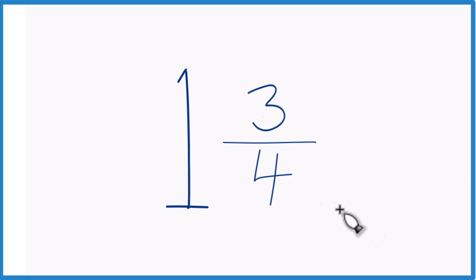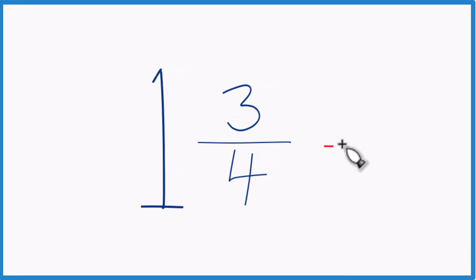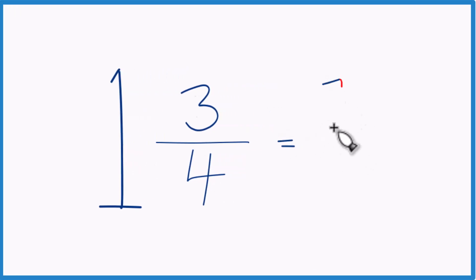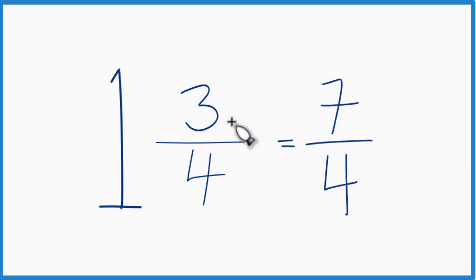So when we look at this here, all we have to do is take 1 times 4 — that's 4 — plus 3, that's 7. So we have 7 in the numerator, and we just bring the 4 across, and that's it. 7 fourths — that's the improper fraction for the mixed number 1 and 3 fourths.